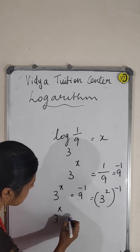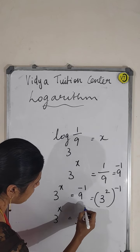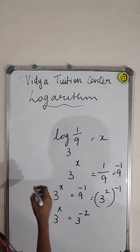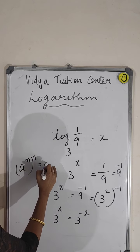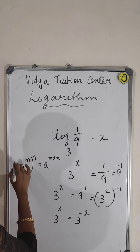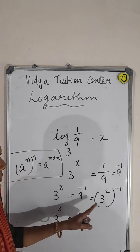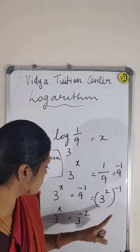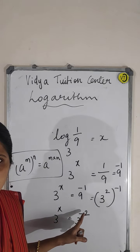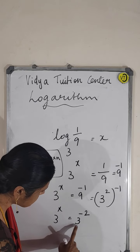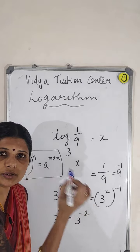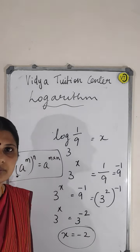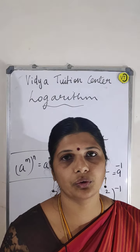So 3 to the power of x is equal to 3 squared, the whole to the power of minus 1. Using the formula a to the power of m, the whole power of n, equals a to the power of m into n — so it is 2 into minus 1, which equals minus 2. Base is the same, so powers are equal: x is equal to minus 2.